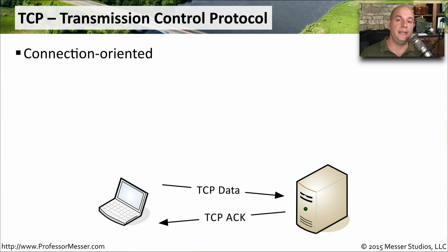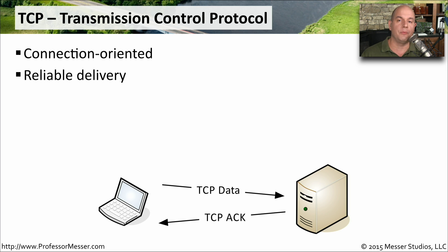Transmission Control Protocol, or TCP, is a connection-oriented protocol. This means that if two devices would like to communicate via TCP, they have to send formal messages to each other to set up the connection before any data can be transferred. TCP is also a reliable protocol. When you send data to another device via TCP, the other device will acknowledge that it received that data, so both sides can be assured that they've received exactly the right information.